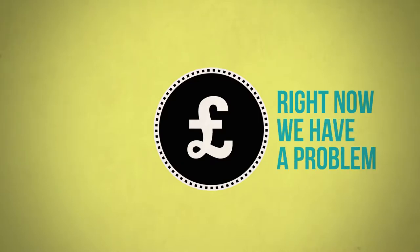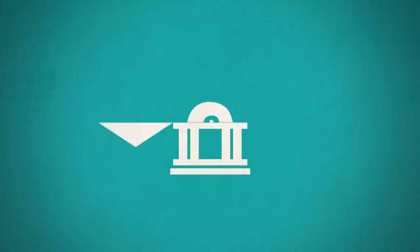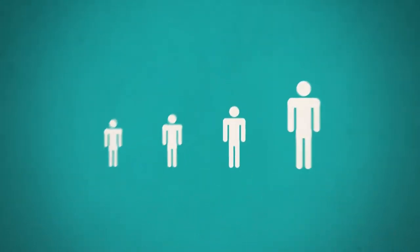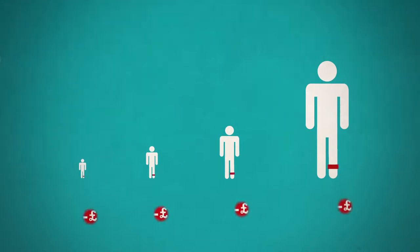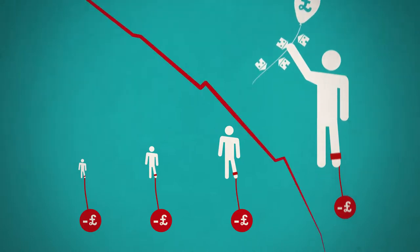Right now, we have a problem. More than 97% of all the money in our economy is created by banks when they make loans. Most of this money goes into house price bubbles and gambling on financial markets. This has led to ever-widening inequality, the highest personal debt in history, and house prices that very few people can afford, before even mentioning the financial crisis.